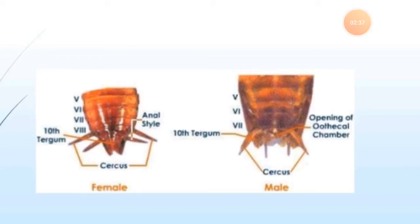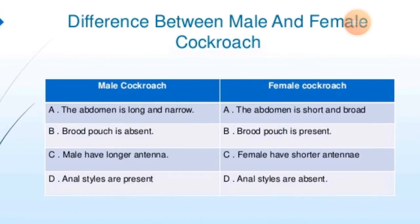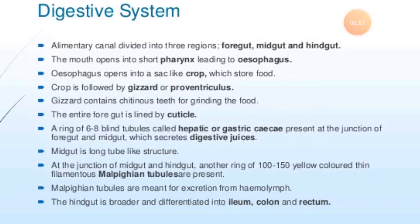If we talk about the body cavity, cockroaches are coelomates — true coelom occurs only in the embryonic stages. In adults, only small cavities around the gonads are found, and the body cavity is filled with hemolymph.